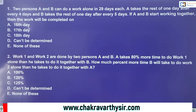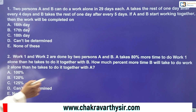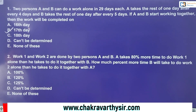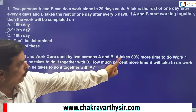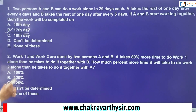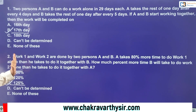You just pause the video here and try to do this by yourself and mark the answer. When answers are concerned: for the first question, the answer is the 17th day — the work will be completed — and for the second question, the answer is 125%. The second question asks how much percent more time B will take to do the work alone than he takes to do it together with A. You just check the answers.